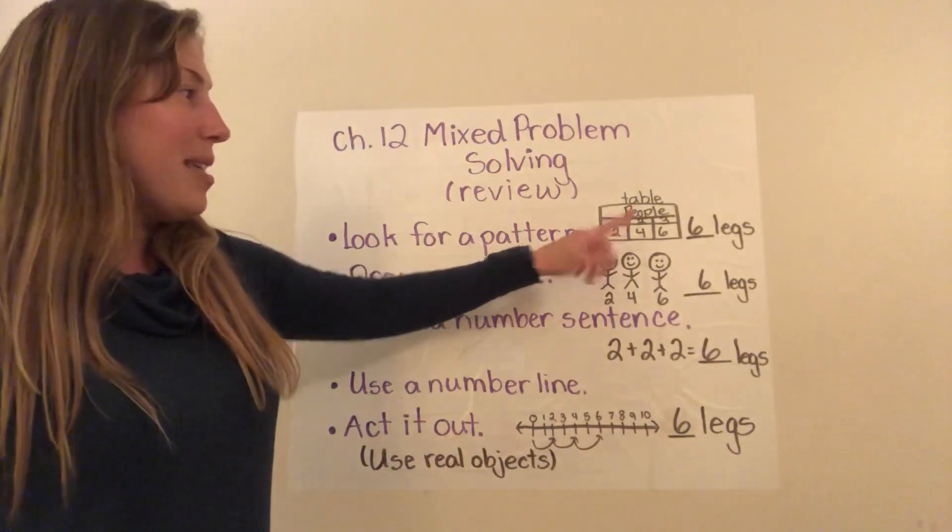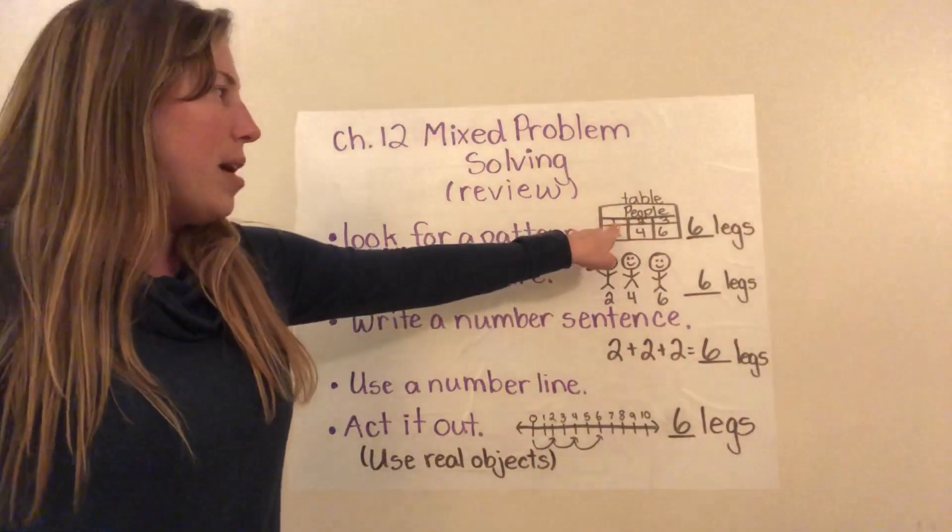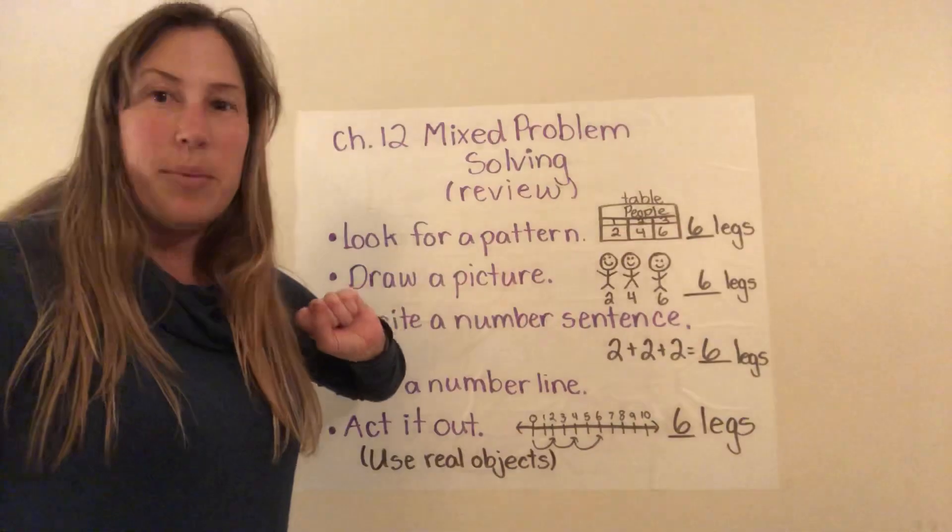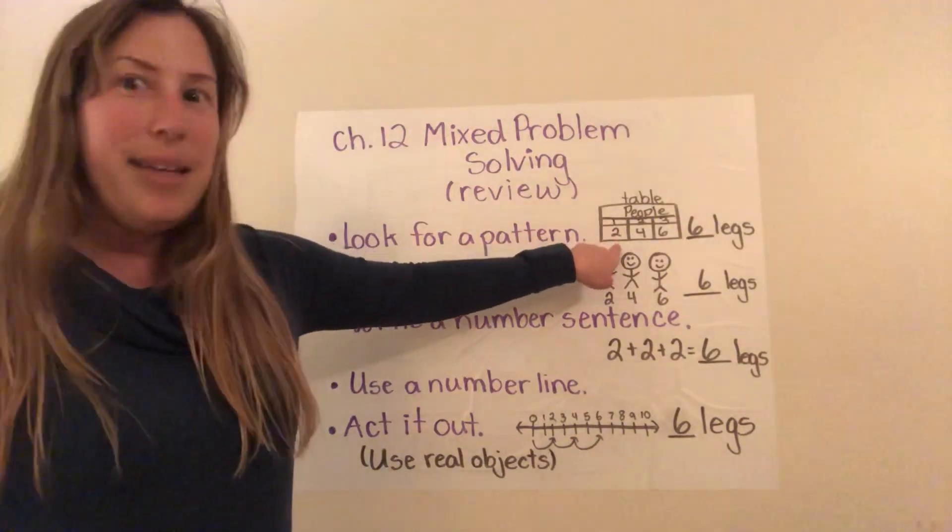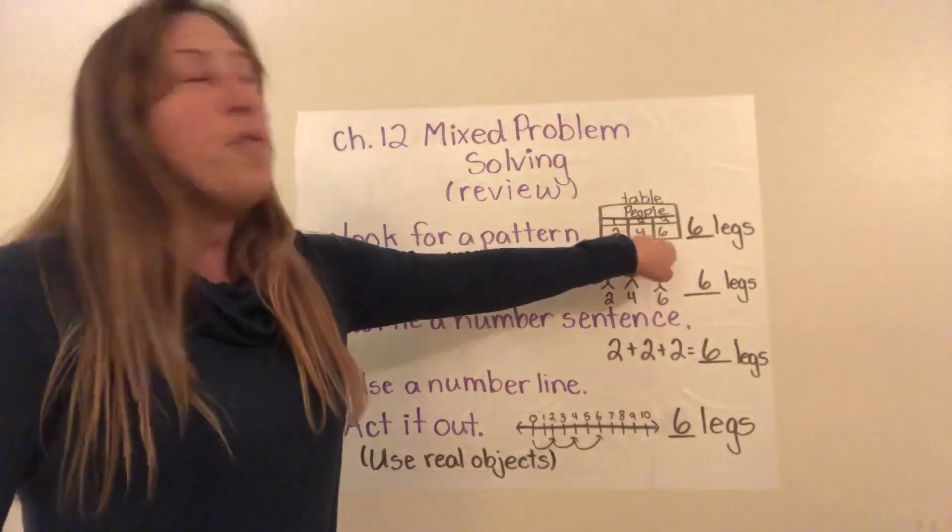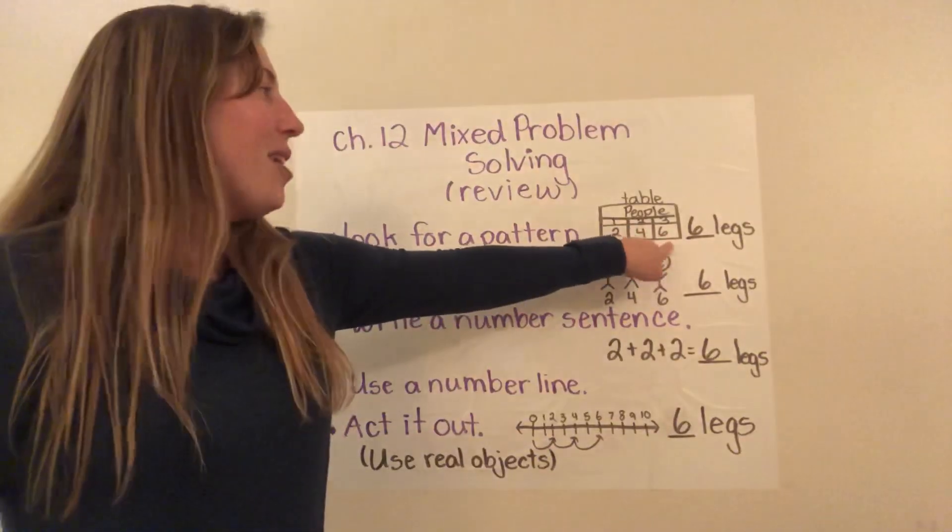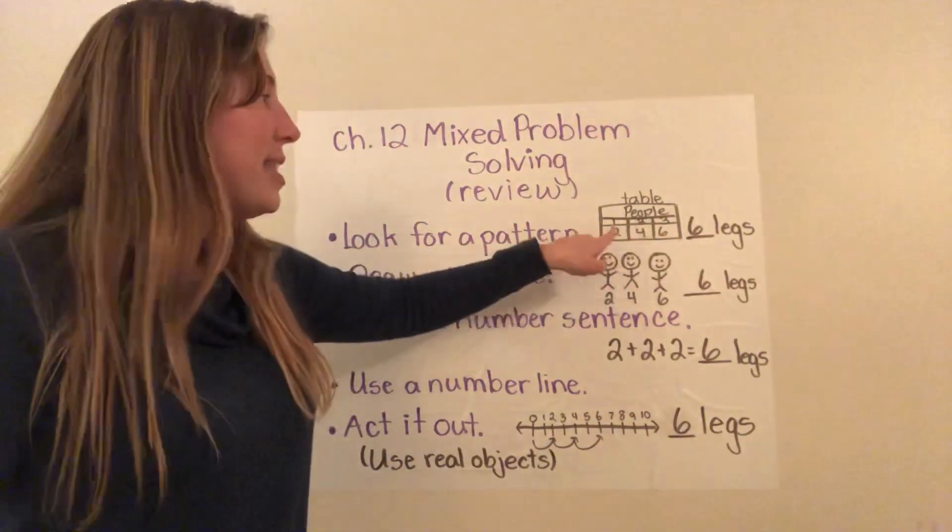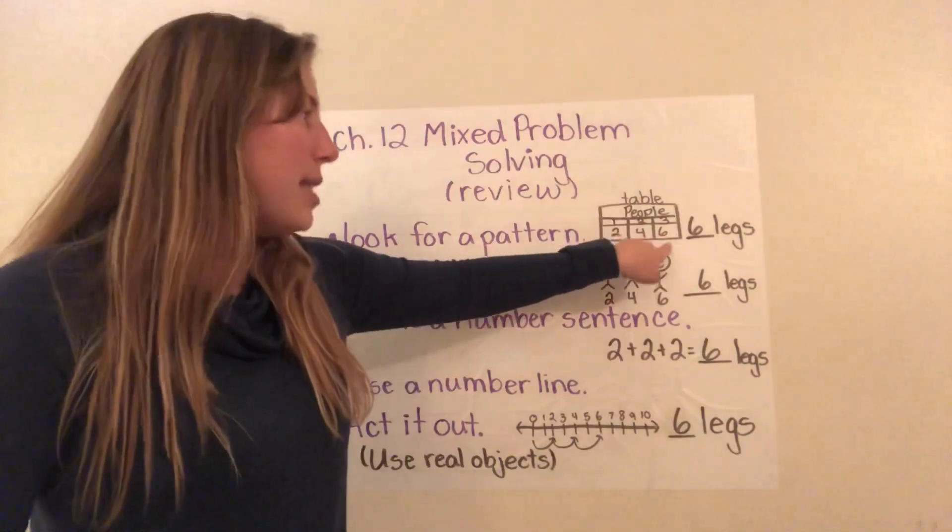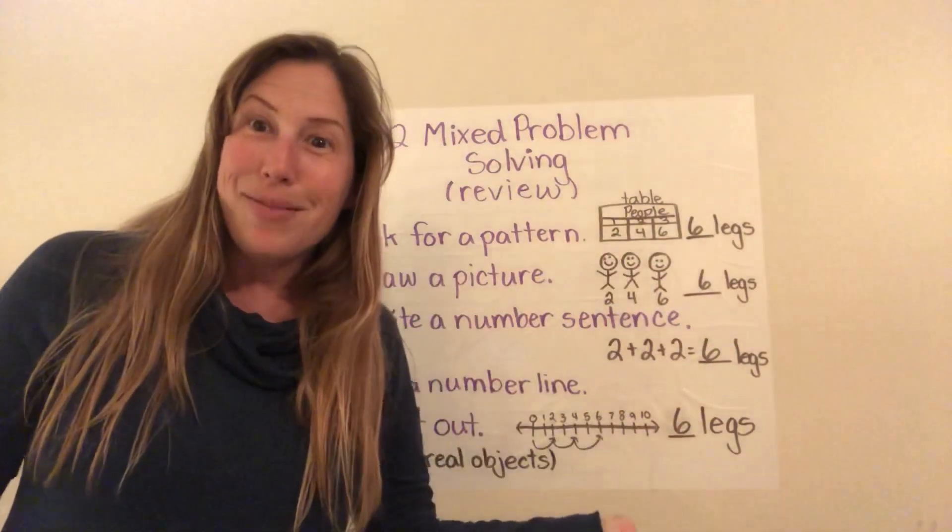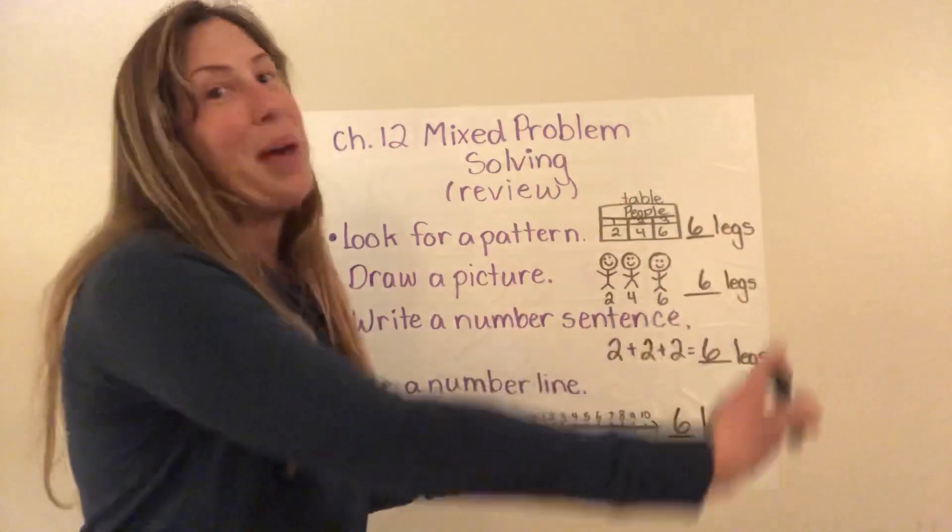So in this example, I have one, two, three people, and Amanda could put in the number of legs for each person or feet for each person, and she would come up with six. And you can see the pattern: two, four, six. Maybe she wanted to get more skates for more friends. She could continue the pattern in the table.